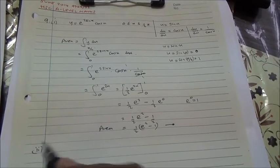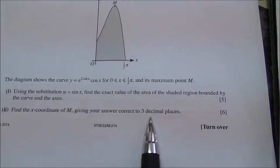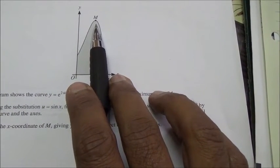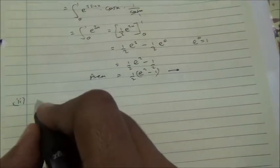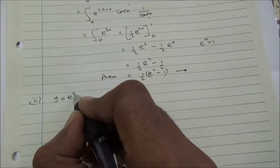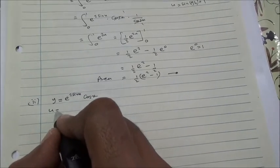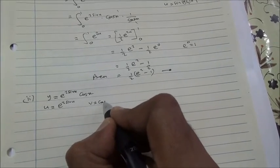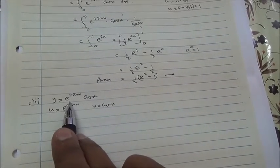For the second part, we need to find the x-coordinate of m, giving the answer correct to three decimal places. Since m is the maximum point, we differentiate and set dy/dx = 0. With y = e to the 2 sin x times cos x, we let u = e to the power of 2 sin x and v = cos x, applying the product rule.